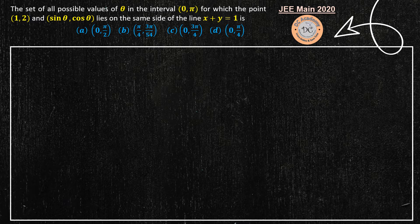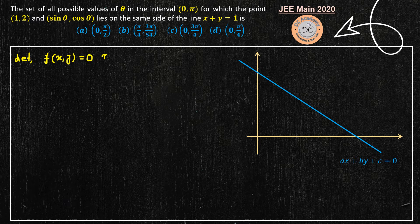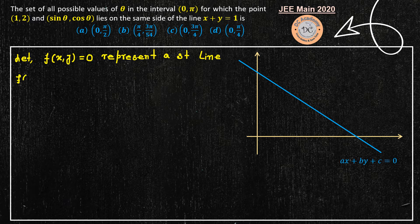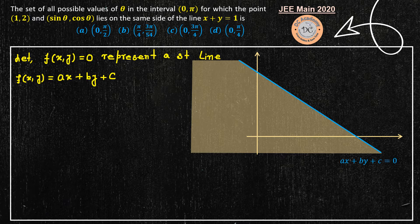First let's understand the problem by deriving the relevant theory. We consider the x-axis and y-axis and the general equation of a straight line. We define f(x, y) equal to ax plus by plus c, which represents a straight line.